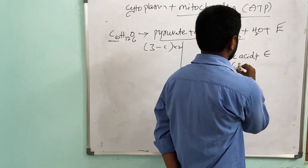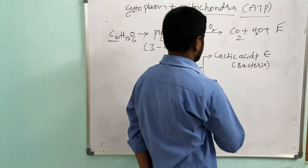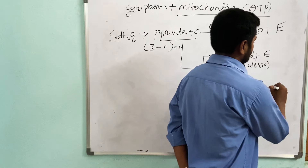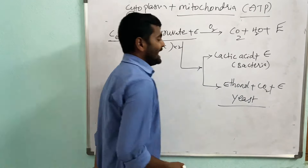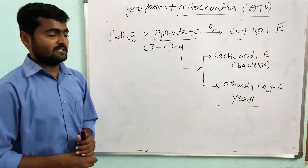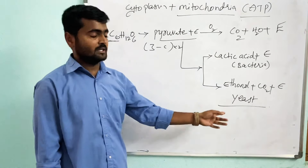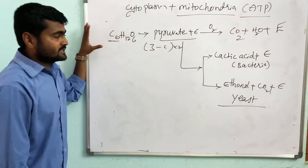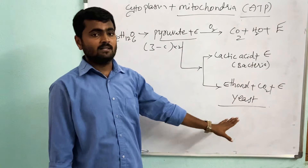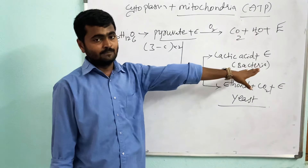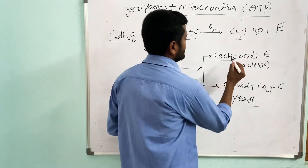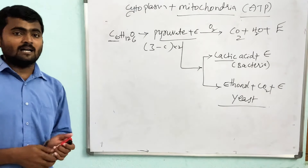Whenever there is no oxygen or very little availability of oxygen, pyruvate breaks down into lactic acid plus a very small amount of energy. In bacteria and yeast, pyruvate can also break down into ethanol plus carbon dioxide plus energy. This is the process happening in our kitchens when preparing idli or dosa dough — we get carbon dioxide bubbles inside the dough. This fermentation process is also used in the preparation of alcohol from sugar. By anaerobic respiration, we get only about one-tenth of the energy produced by aerobic respiration.